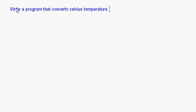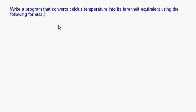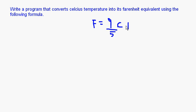Now another program: write a program that converts a Celsius temperature into its Fahrenheit equivalent using the following formula — F equals 9/5 times C plus 32, where C is Celsius.